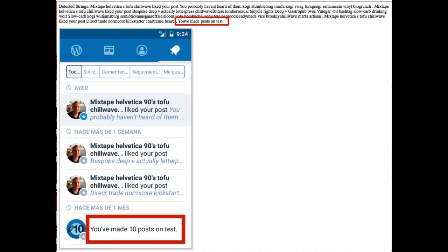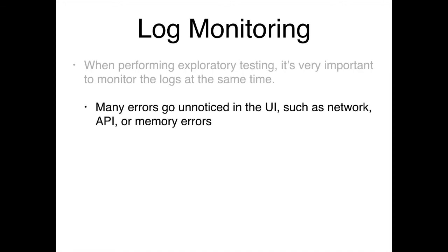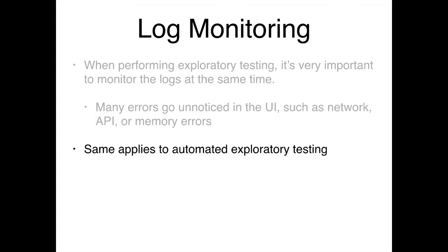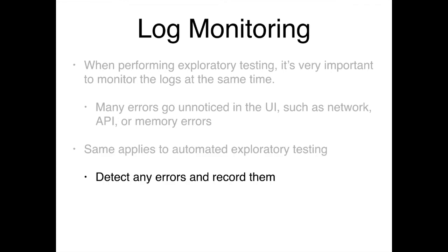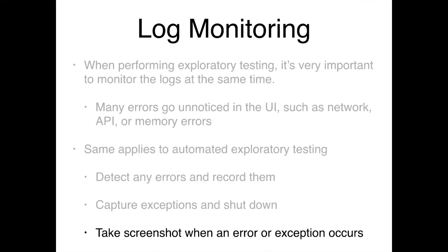Log monitoring: when performing exploratory testing, it's important to monitor logs. It's not enough just to manually test an application looking at the UI — you should always pull up the console and monitor the log as you're testing, because many errors go unnoticed on the UI, such as network, API, or memory issues. The same applies for automated exploratory testing — I want to detect if an error occurs, record it or capture exceptions, shut everything down, and take a screenshot when an error or exception occurs so I can add it to a bug report.